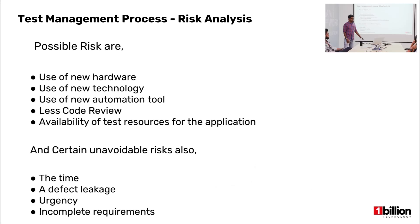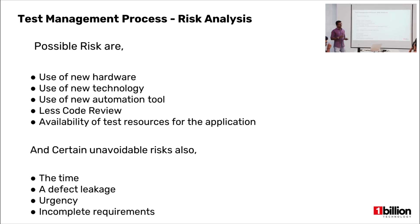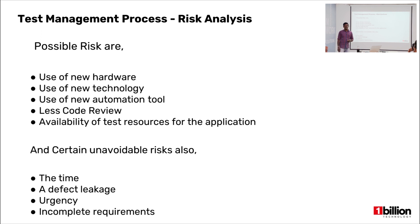I have divided risks into two types: possible risks and certain unavoidable risks. For possible risks found in every project, we may need to adapt to new hardware or new technology, or change the automation tool. In those cases, we need to prepare resources, manage budget at the project level, and ensure we meet our deadlines.